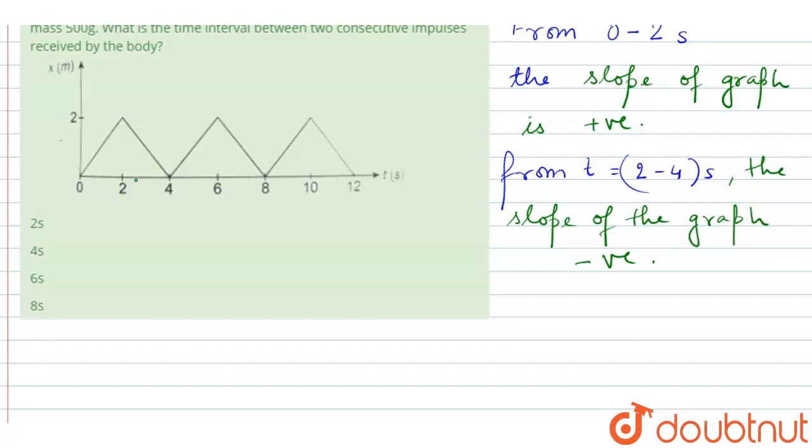Means at every consecutive impulse, the time interval is nothing but 2 seconds. So therefore, at 2 seconds time interval, the body receives consecutive impulses. This is the thing.